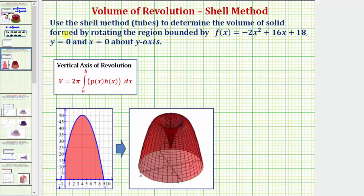y equals 0 is the x-axis, x equals 0 is the y-axis. So this shaded region is the bounded region that we're rotating about the y-axis, which would be here.